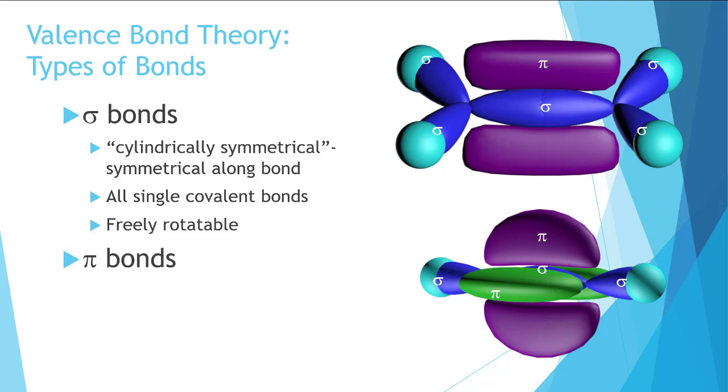Pi bonds are named due to their symmetry, which includes a plane that goes along the internuclear axis. So it is symmetric across this plane, or it is symmetric across this plane. Because p orbitals have two lobes, the lobes must overlap. This then locks the rotation. So that double and triple bonds are not rotatable.